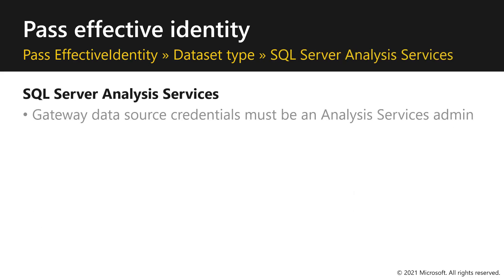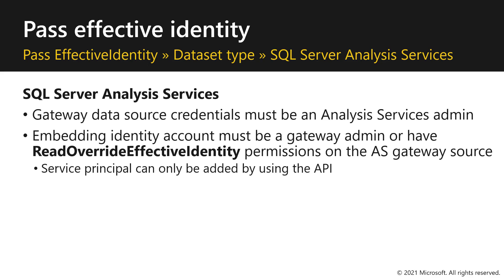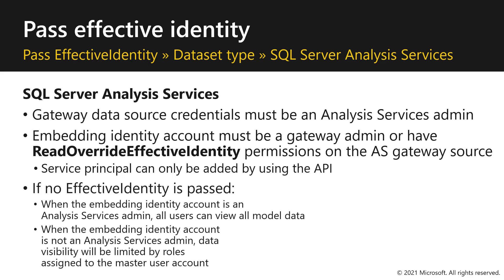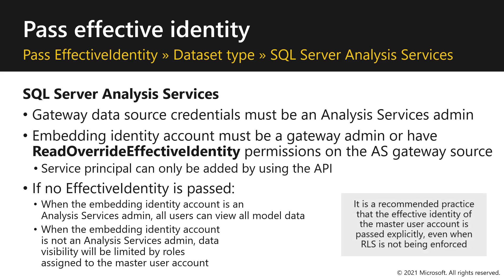For SQL Server Analysis Services, the gateway data source credentials must be an Analysis Services admin. The embedding identity account must be a gateway admin, or have read-override effective identity permissions on the gateway data source. A service principal can only be added by using the API. If no effective identity is passed and the embedding identity account is an Analysis Services admin, all users will view all model data. When the embedding identity account is not an Analysis Services admin, data visibility will be limited by roles assigned to the master user account. It is a recommended practice that the effective identity of the master user account is passed explicitly, even when row-level security is not being enforced.